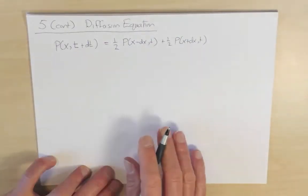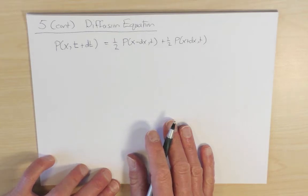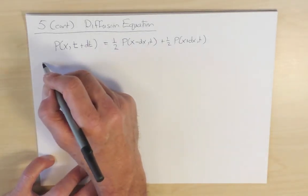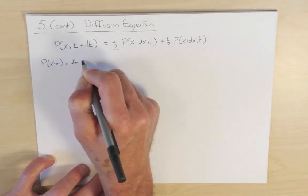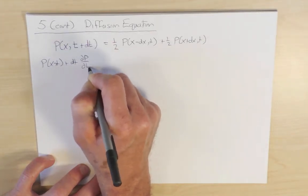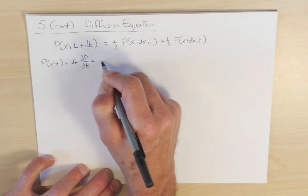Let's now take a Taylor series expansion of this equation. So I'll write p(x,t+dt), the partial derivative dp/dt, plus higher order terms. And on the right-hand side, I have one-half,